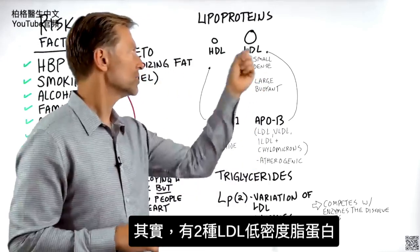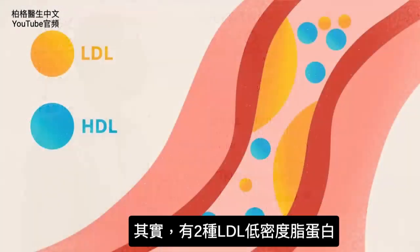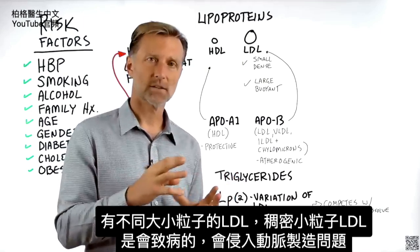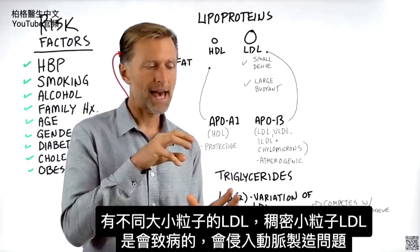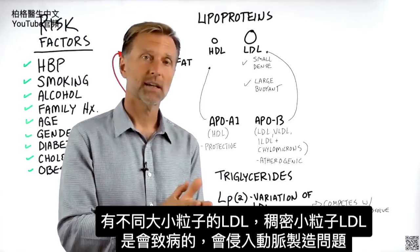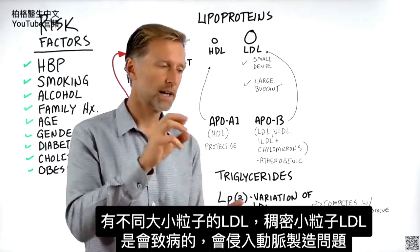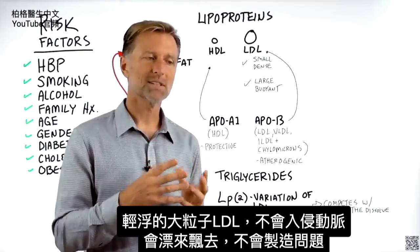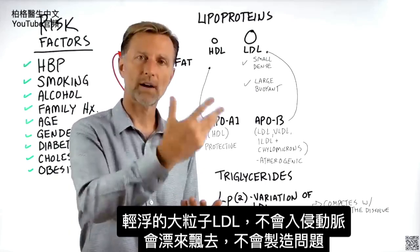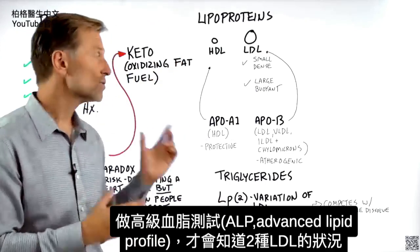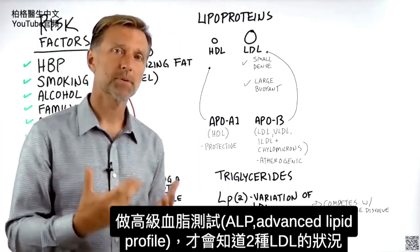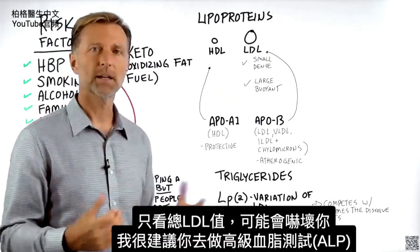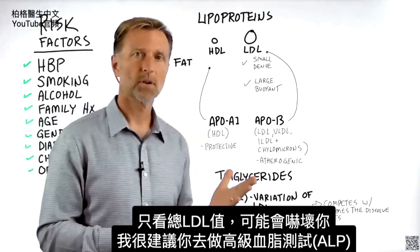But there's more information you need to know. There are two types of LDL — if you look at LDL from another angle, there are these little particle sizes. You have one type called the small-dense particle size, and that is the type that is pathogenic — it creates problems. It can invade the arteries and start creating problems. But when you have the large, buoyant particle size, they don't invade the inside of the arteries — they float around but they're not creating problems. This is why if you don't get an advanced lipid profile test, you're just going to look at the total LDL and that might scare you. I highly recommend you get the advanced lipid profile test.